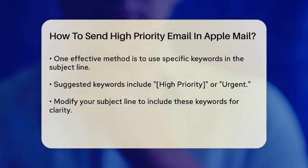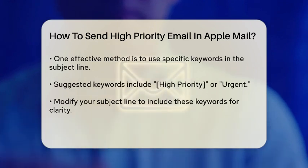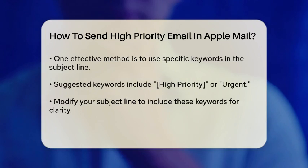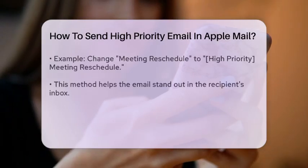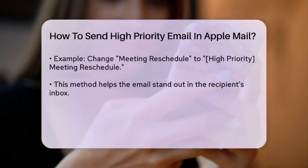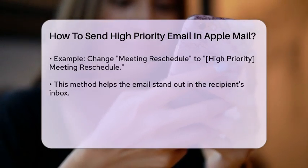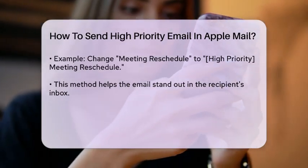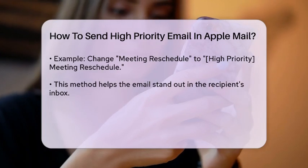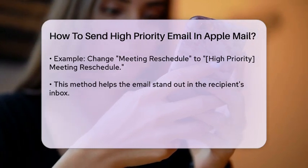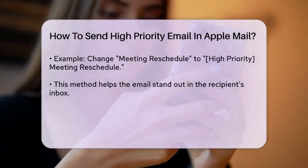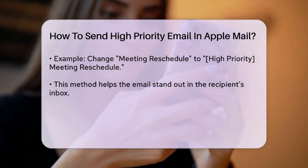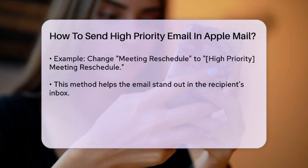To do this, simply compose your email as you normally would and then add one of these keywords to the subject line. For instance, if your subject line is 'meeting reschedule,' you could change it to 'high priority meeting reschedule' or 'urgent meeting reschedule.' This method relies on the recipient's attention to the subject line, so it's a good idea to ensure that your subject line is clear and concise. This approach can help your email stand out in a crowded inbox.